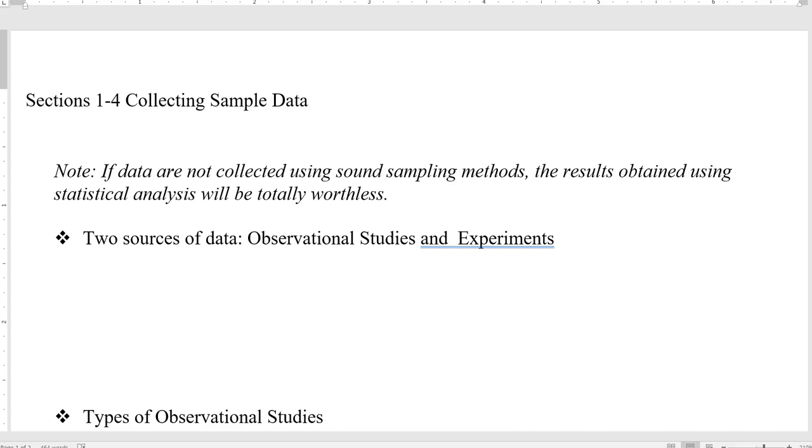For example data, section 1.4, we have two types of data that we collect. We do observations, and we have experiments. For the observational studies, we do nothing.